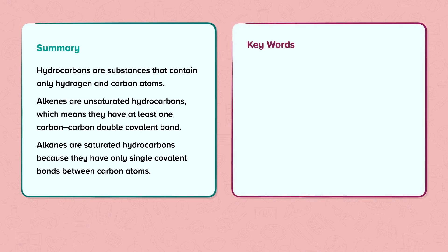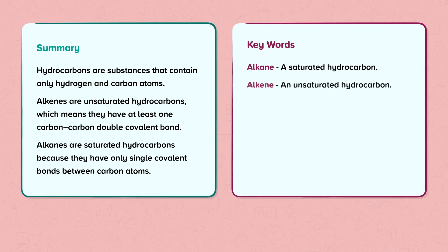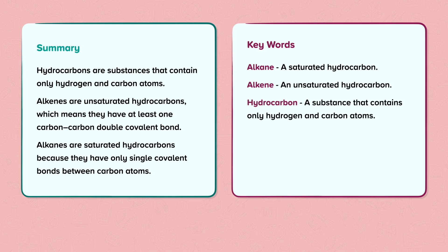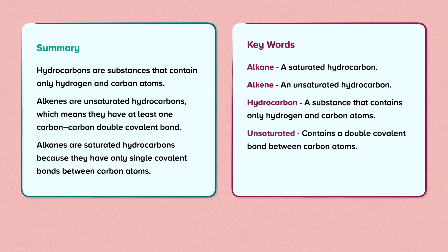Keywords. Alkane: a saturated hydrocarbon. Alkene: an unsaturated hydrocarbon. Hydrocarbon: a substance that contains only hydrogen and carbon atoms. Unsaturated: contains a double covalent bond between carbon atoms. Saturated: contains only single covalent bonds between carbon atoms.